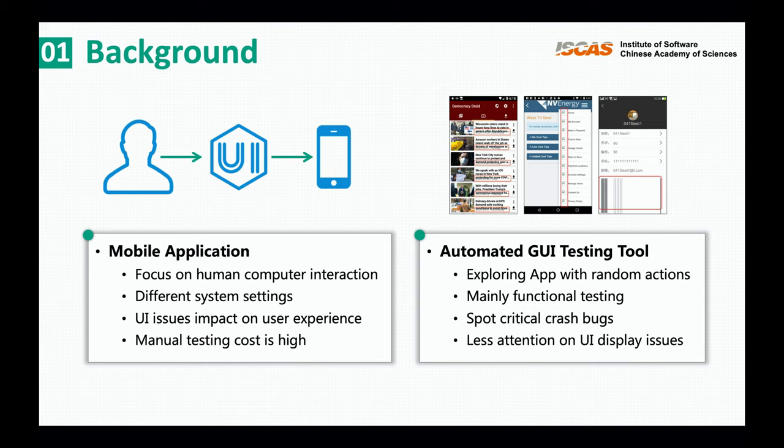In order to ensure the correctness of UI display, companies have to recruit many testers for UI testing or crowd testing. Some automated testing tools are also widely used in industry. However, these tools can only support critical crash bugs rather than UI display issues, which cannot be captured by the system.